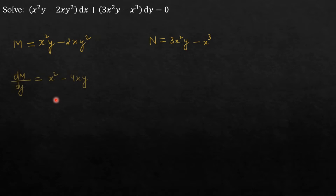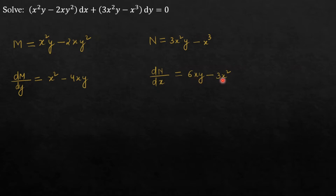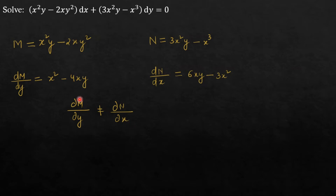Now, ∂M/∂y = x² − 4xy, treating x as a constant. And ∂N/∂x = 6xy − 3x², treating y as a constant. You can clearly see that ∂M/∂y is not equal to ∂N/∂x — these two terms are not equal. Hence the given differential equation is not exact.